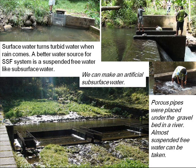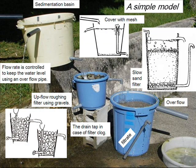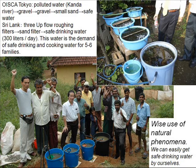Surface water turns turbid when heavy rain comes. A better water source for this system is suspended-particle-free water, like subsurface water — we can make an artificial subsurface water supply. Slow sand filter is the suitable environment for filamentous algae. In a pond and lake, floating phytoplankton can grow. In a horizontal riverbed current, attached algae can grow. In the vertical current on the slow sand filter, only filamentous algae can grow. We can make a small-scale model by ourselves — wise use of natural phenomena.